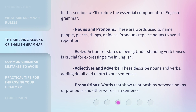In this section, we'll explore the essential components of English grammar. Nouns and pronouns — these are words used to name people, places, things, or ideas. Pronouns replace nouns to avoid repetition.